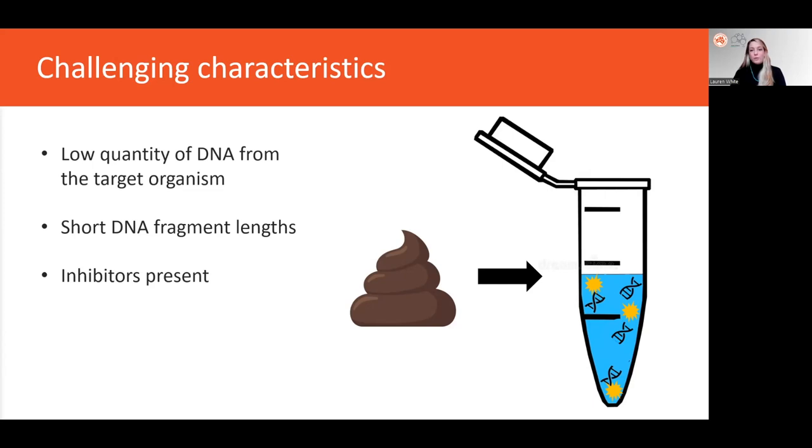Scat samples in particular are prone to contain inhibitors. These are molecules or chemicals that can be co-purified with DNA during extraction, and they can interfere with molecular techniques and sequencing if they're not effectively removed.